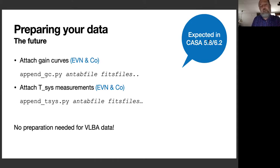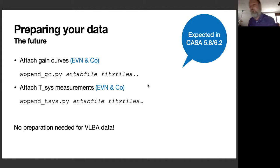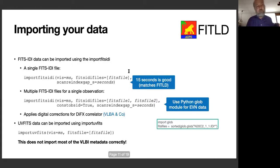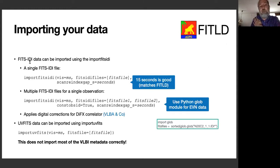CASA 5.8 (the next version) will have better gain curve support. At that point, VLBA users shouldn't need to do anything extra, and for the EVN you'll simply append the gain curve and TSYS to the FITSIDI file. Importing FITSIDI data is done with the importfitsidi task, where you specify the output measurement set name, the list of FITSIDI files, and a scanreindex gap (typically 15 seconds) to reconstruct scan information, since scan boundaries are not stored in FITSIDI.